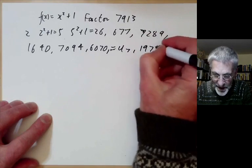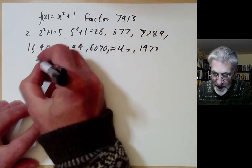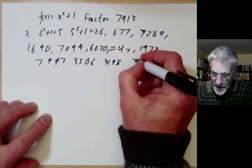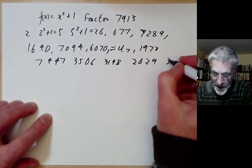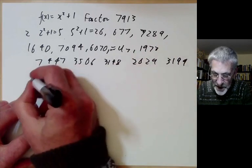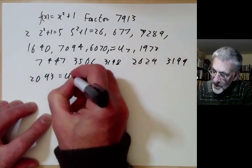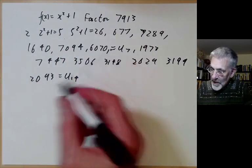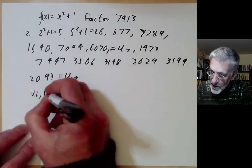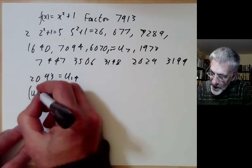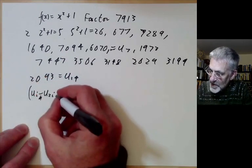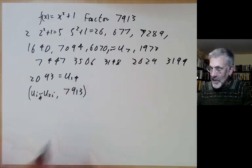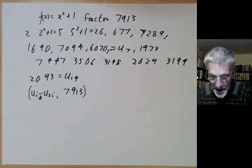We continue the calculation getting u7 equals 7097, then u14 equals 2093. All the time we're checking ui minus u2i with 7913 and trying to see what the greatest common divisor is. Most of the time this won't be very interesting, it'll either be 1 or 7913 occasionally. But when we get to u14 minus u7 with 7913, we find this is actually equal to 41, so we have found a prime factor.